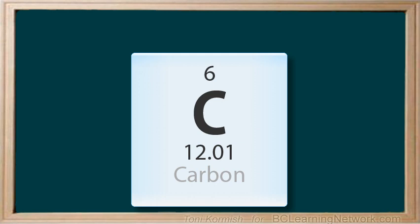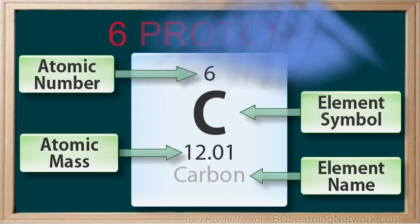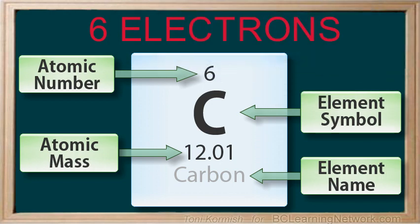Let's take a look at the carbon atom as an example. As you can see, the atomic number for carbon is six. This tells us that the number of protons in the nucleus of a carbon atom is six, and the number of electrons orbiting the nucleus of a neutral carbon atom is also six.